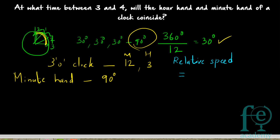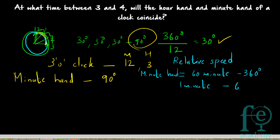As discussed in the previous video, the minute hand travels 360 degrees in 60 minutes. Therefore, in 1 minute, the minute hand will be travelling 6 degrees.